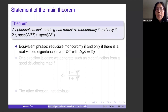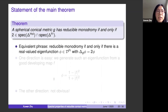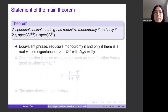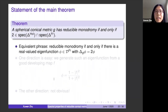Our main theorem is that a spherical conical metric G has reducible monodromy if and only if 2 is in the joint spectrum of the holomorphic Laplacian and the Friedrich's Laplacian. Equivalently, this holds if and only if there is a real-valued eigenfunction in the Friedrich's domain — such a real-valued eigenfunction is automatically also in the holomorphic extension.